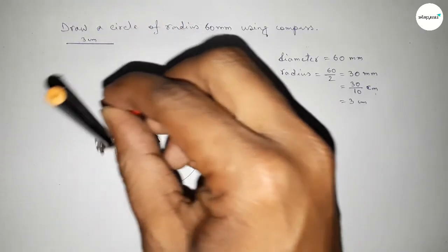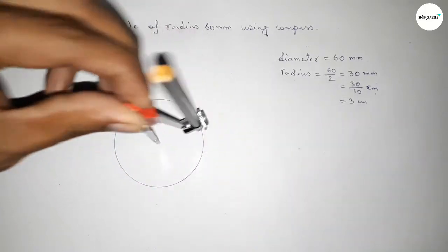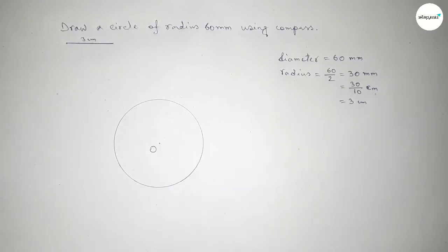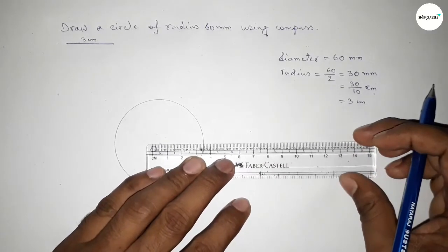So this is the center. Taking here point O. Now first joining this line and this is the radius of this circle.